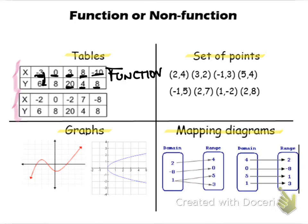Notice that we have x values of -2, 0, -2, 7, and -8. The x value of -2 is listed here paired with 6, and an x value of -2 is paired here with 20.